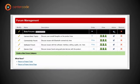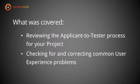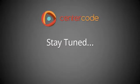In this video we covered reviewing the applicant-to-test process, making sure the promotion process works as expected, that users step through the notice chain accordingly, and that all links show up in the left-hand menu. We also talked about checking for and correcting common user experience problems including missing links in the left-hand menu, missing project access, and low participation. We have more videos coming up pertaining to other launch steps and getting those users fully promoted into your test, so stay tuned.